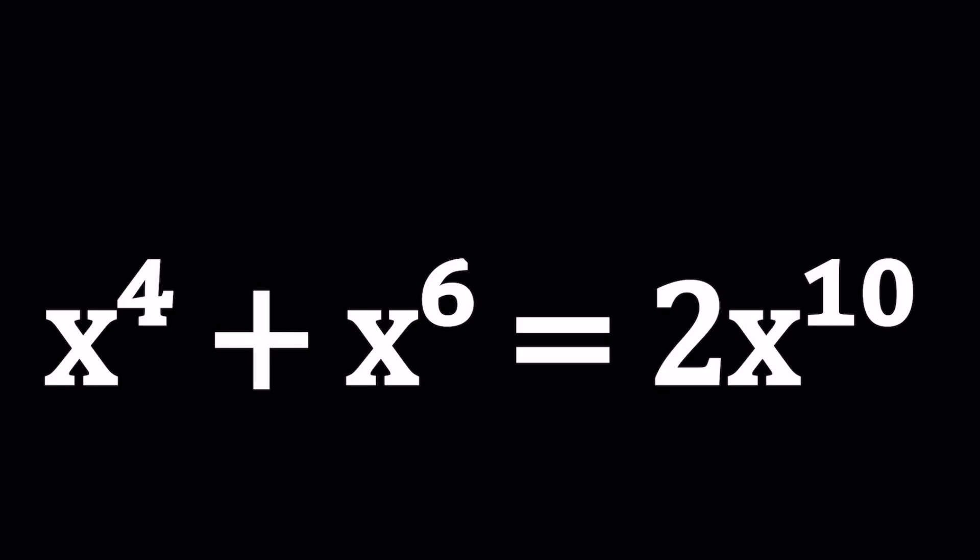Hello everyone. In this video, we're going to be solving a deksic equation. Deksic basically means we have x to the 10th power in our equation. We have x to the power 4 plus x to the power 6 equals 2 times x to the power 10. And we're going to be solving for all x values.